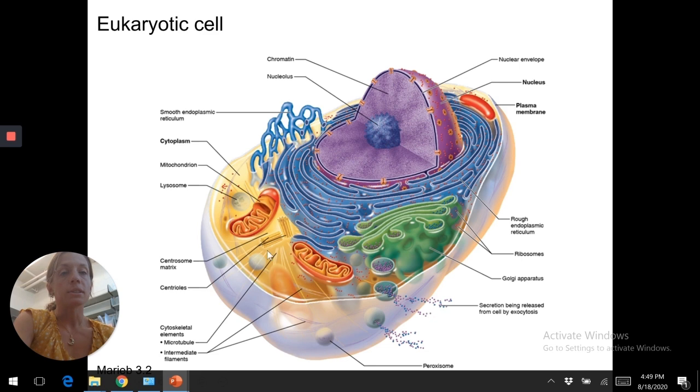Then we've got these cytoskeletal elements. So filaments is what I have for your key terms for now. Filaments is a pretty general term that refers to proteins that are inside the cell that are important for the structure. Microtubules, intermediate filaments are shown here that actually give the cell shape.